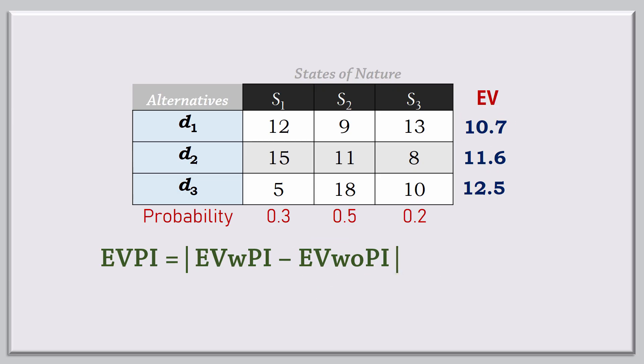The expected value with perfect information, EV with PI, is calculated based on the idea that we know the state of nature that will occur with certainty before making the decision. So if we know S1 is going to occur, we choose D3 because it has the lowest cost of 5. If we're certain S2 will occur, we choose D1 since it has the lowest cost of 9. And if we're sure it is S3, we choose D2 at the lowest cost of 8.